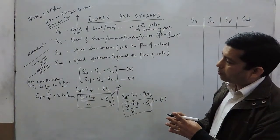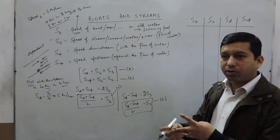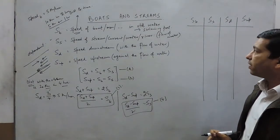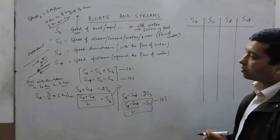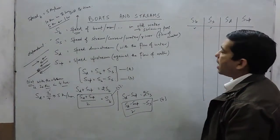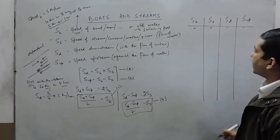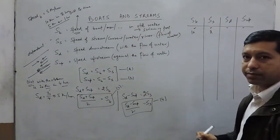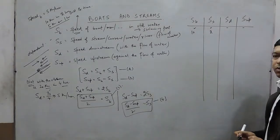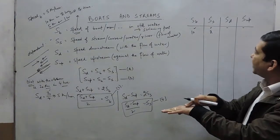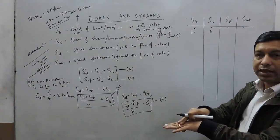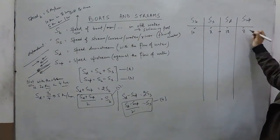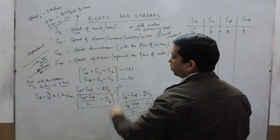So there are four different types of speed: speed of boat, speed of stream, speed downstream, and speed upstream. Any two values are given in a question and the remaining two must be found. For example, if speed of boat = 10 km/h and speed of stream = 2 km/h, then speed downstream = 12 km/h and speed upstream = 8 km/h. Downstream is always greater than upstream.